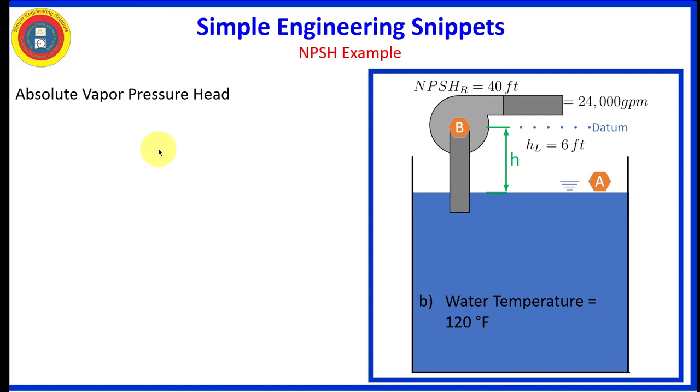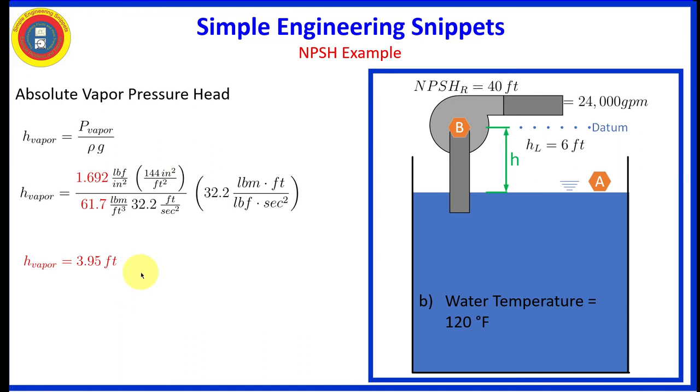Okay, going back in a little bit different direction. Let's calculate the absolute vapor pressure head first. And again, it's the vapor pressure divided by rho G. And it's the same calculation. Except now we get 3.95 feet. At 60 degrees, we got 0.592 feet. So a little over 6.5 times greater than what it was at 60 degrees. So quite significant.